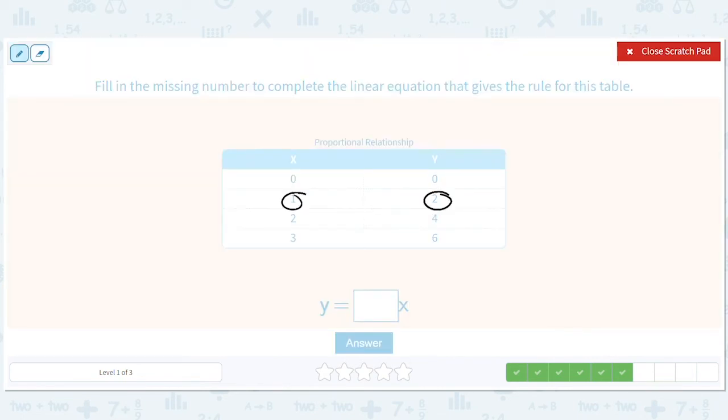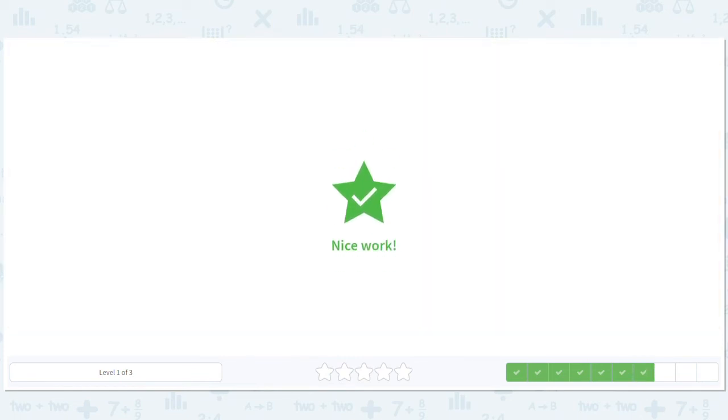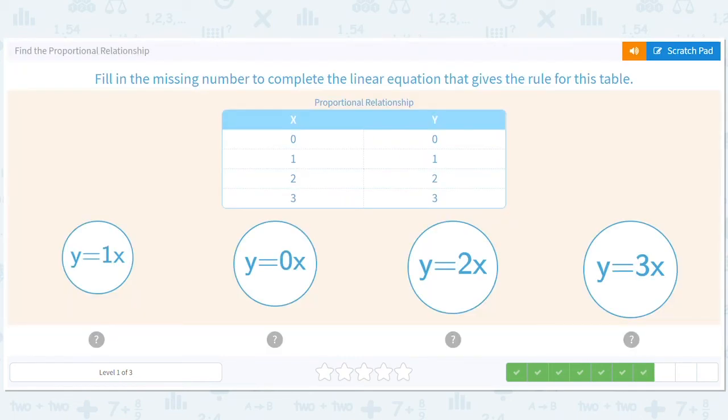2, 1. We'll go ahead and write out the steps. 2 divided by 1 equals 2. 4 divided by 2 equals 2. We could also do 6 divided by 3 equals 2. So we've got 2.